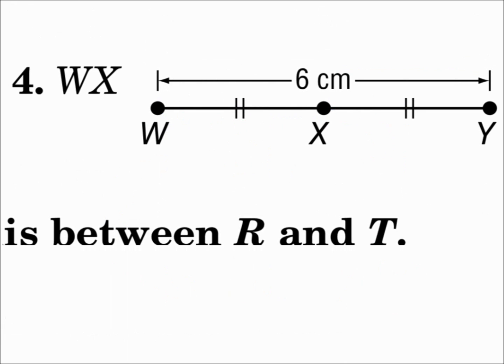The measure of segment WX. Well, segment WX is one part, and it's congruent to the other part, XY. So, we could say that each of those equals WX. That's a WX, and that's a WX, because they're marked congruent.